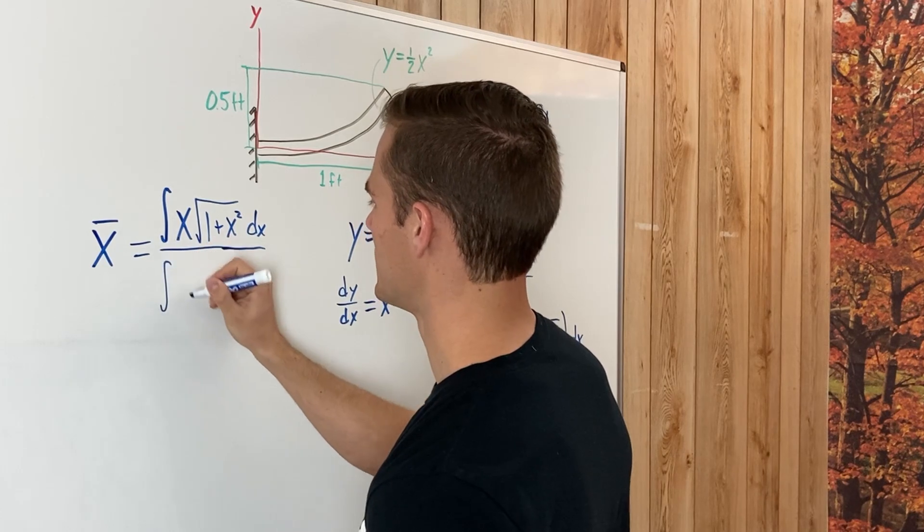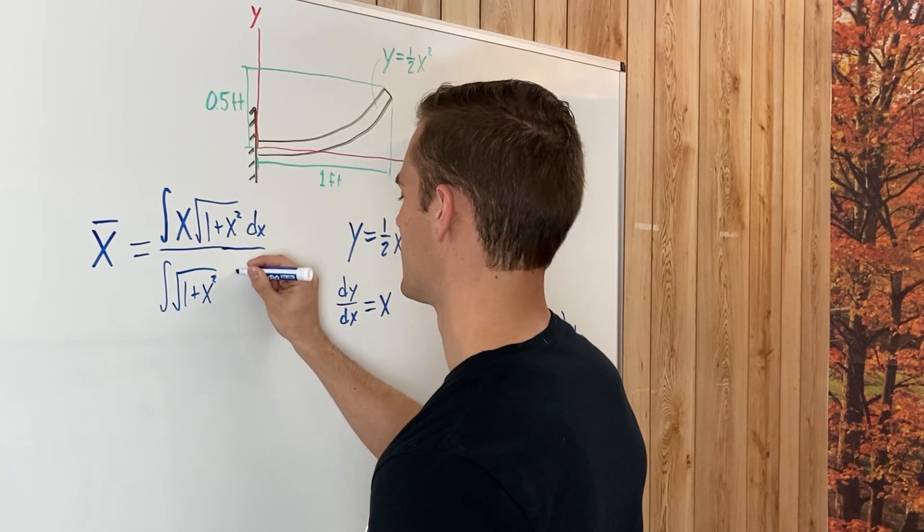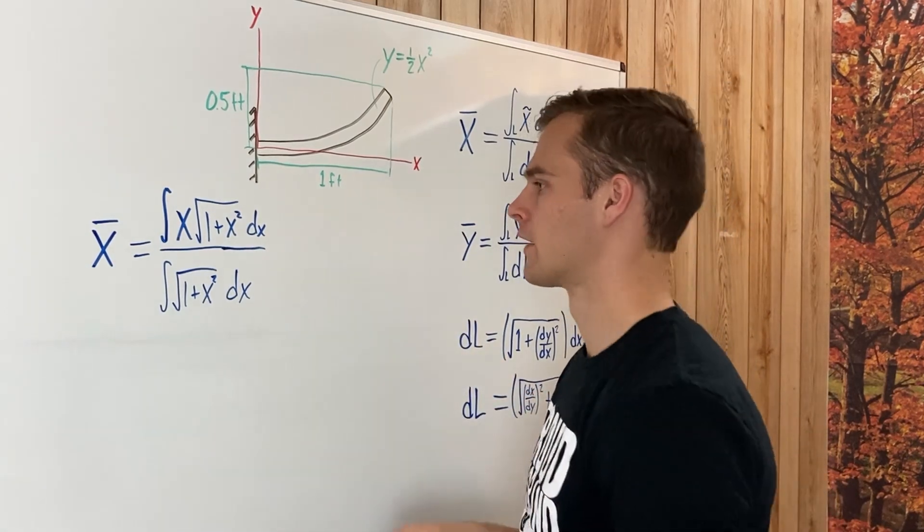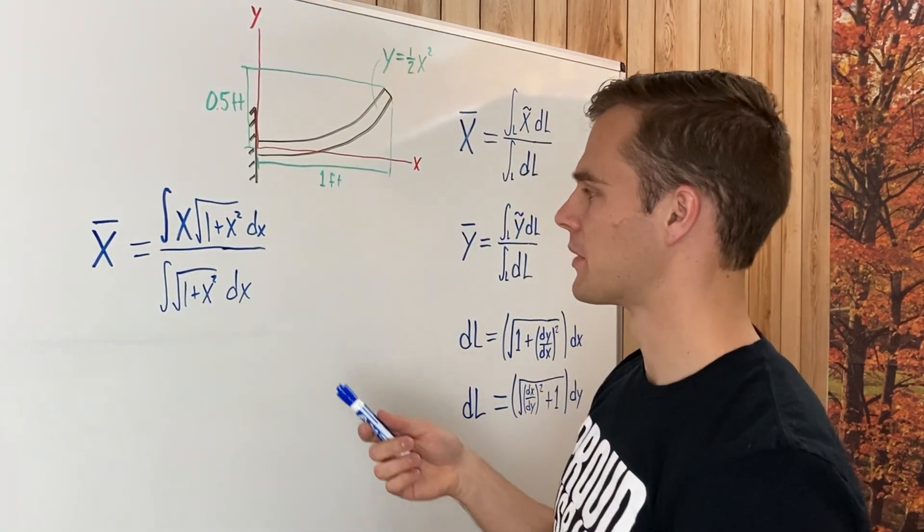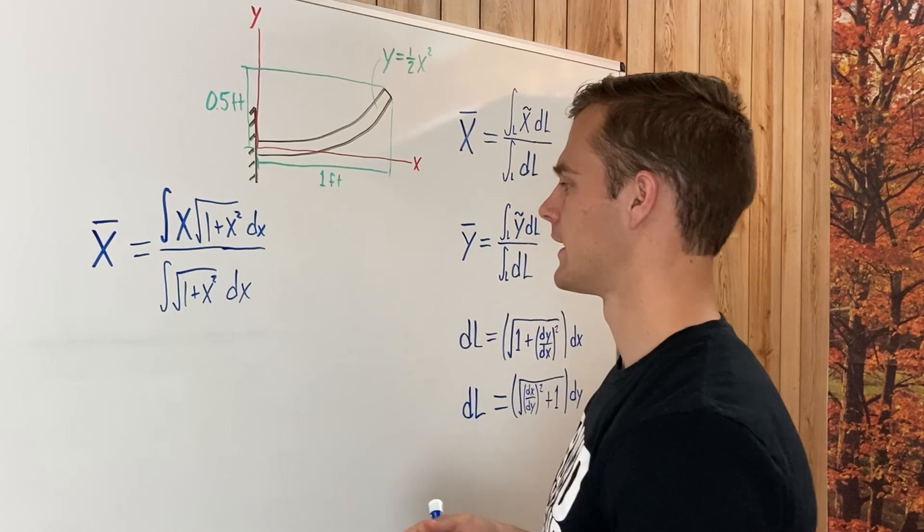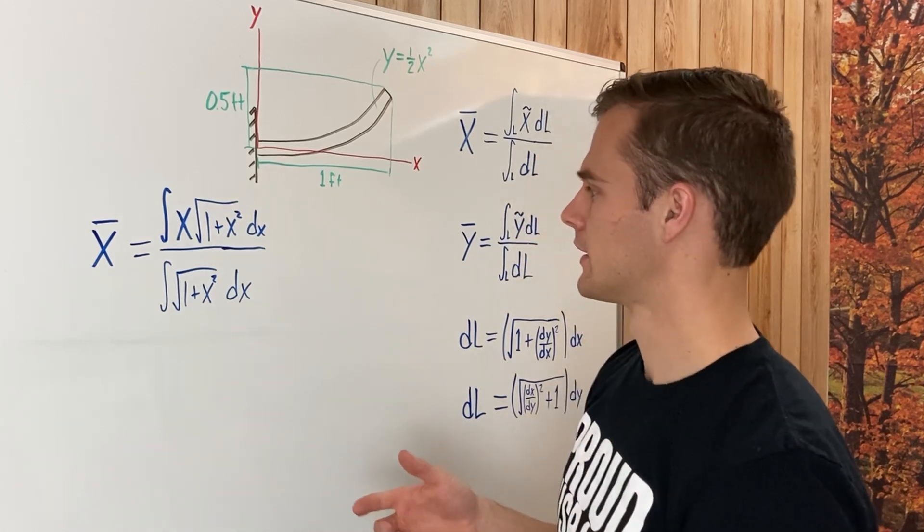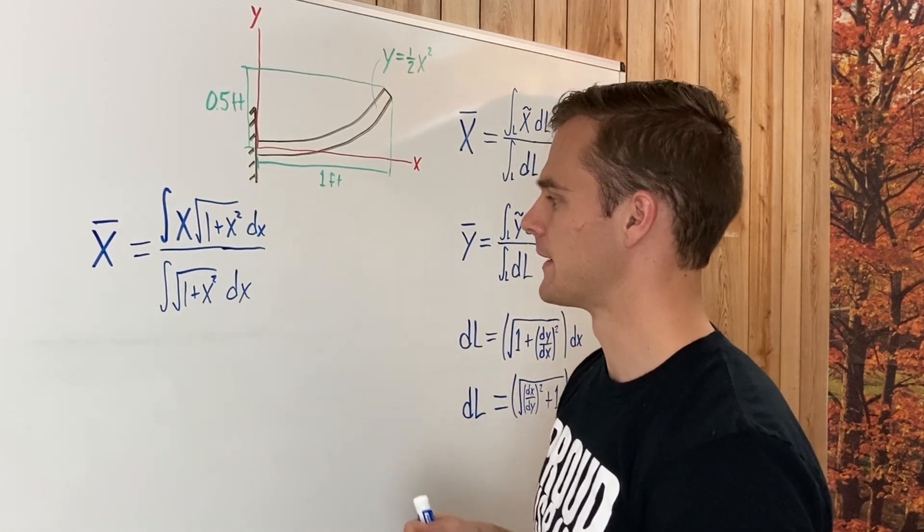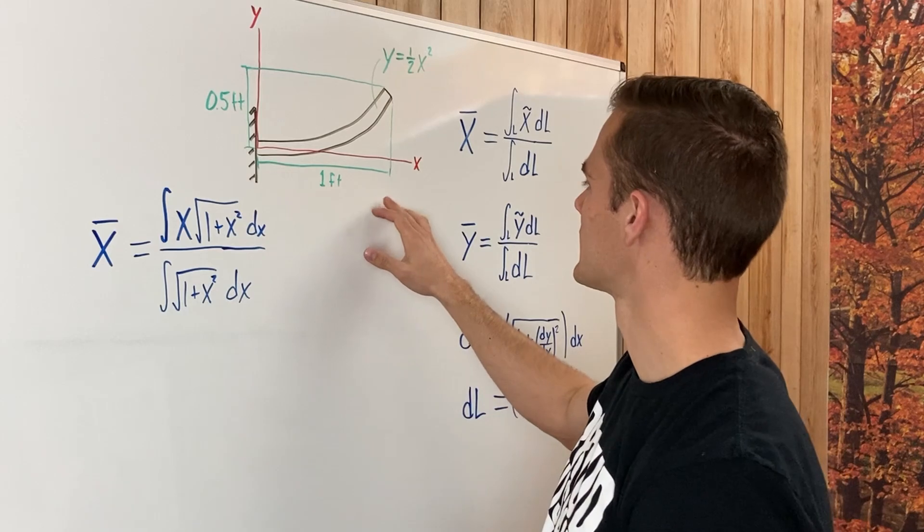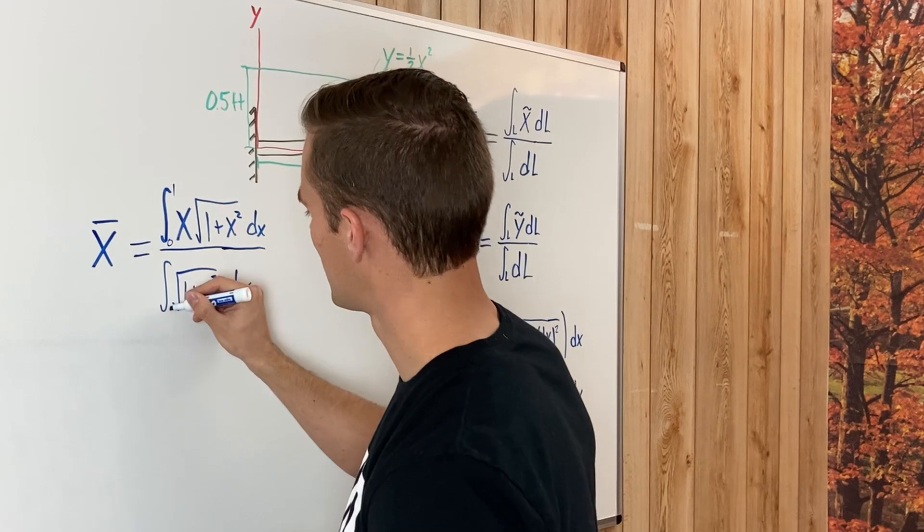And then putting that equation into our integral, we have 1 plus x squared dx. And then on the bottom, it's just going to be dl, which is this put in again. So 1 plus x squared dx. But we forgot to do the bounds of the integral. We're just going to go from 0 to 1 on this, since that's the length of the rod. So that's just going to be 0 and 1 and 0 and 1.